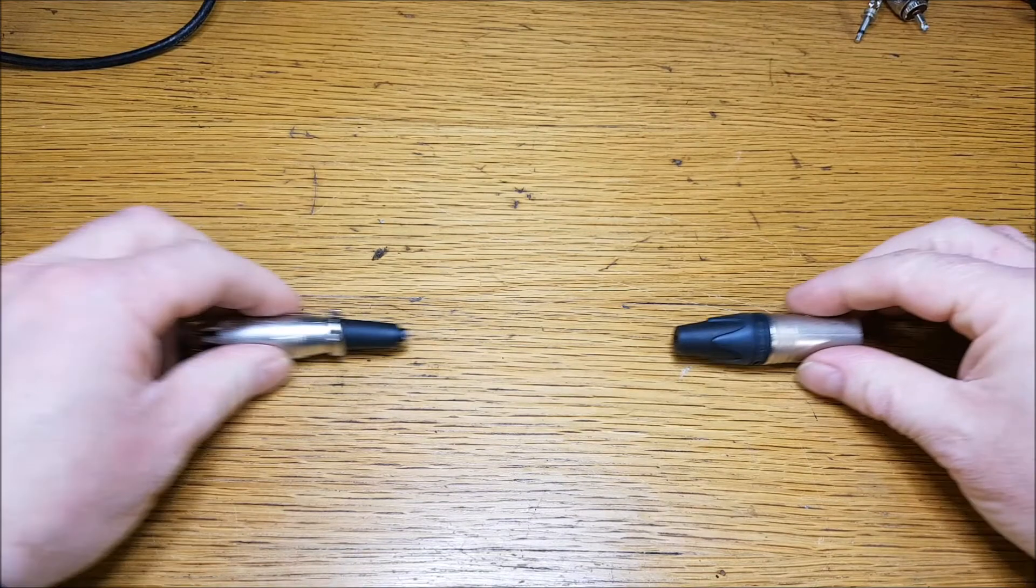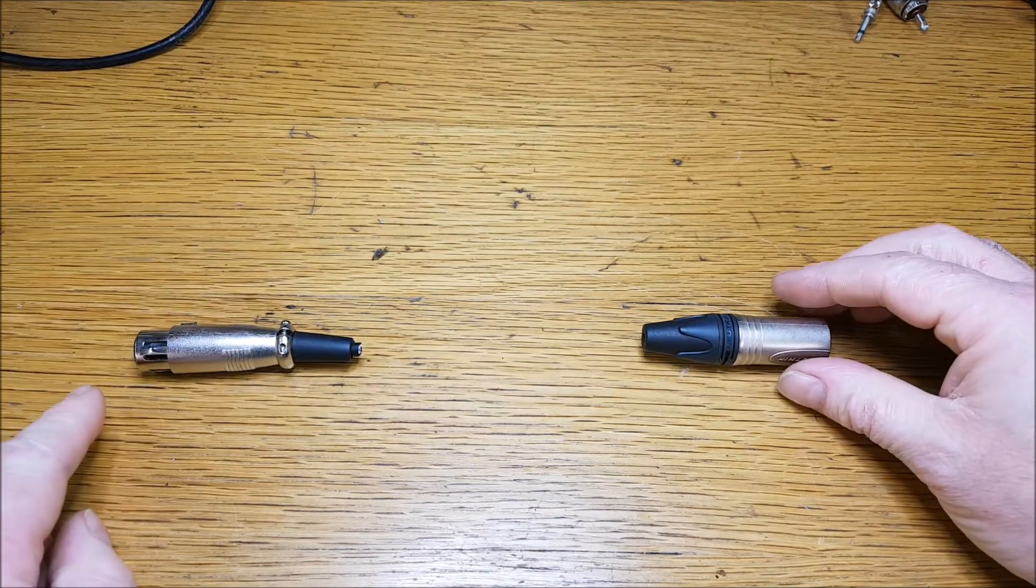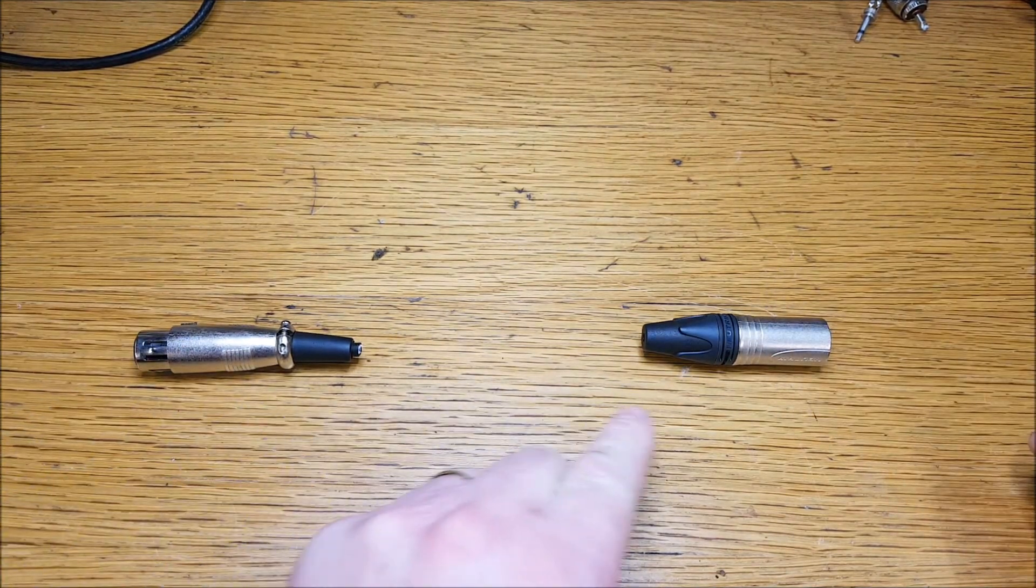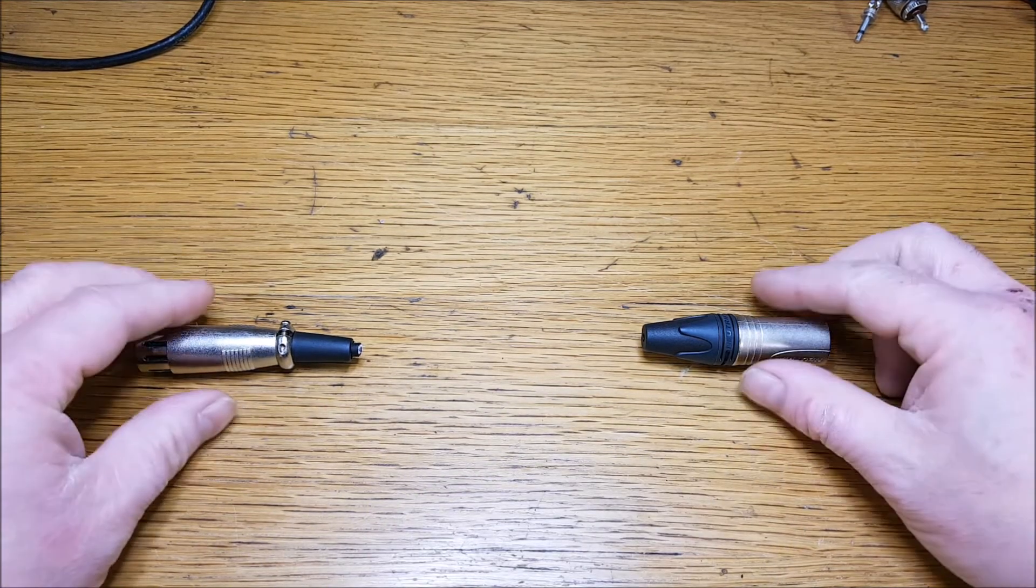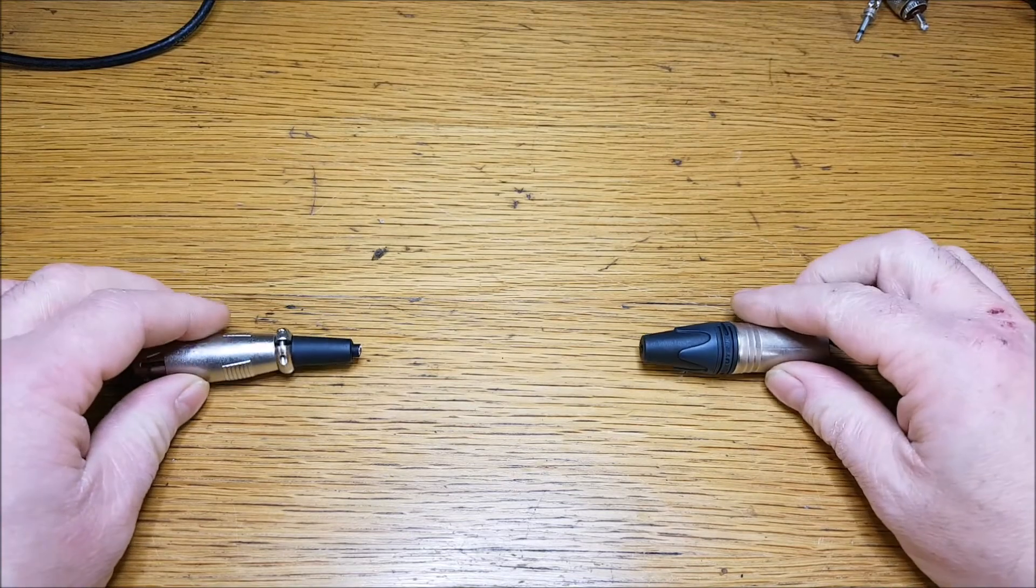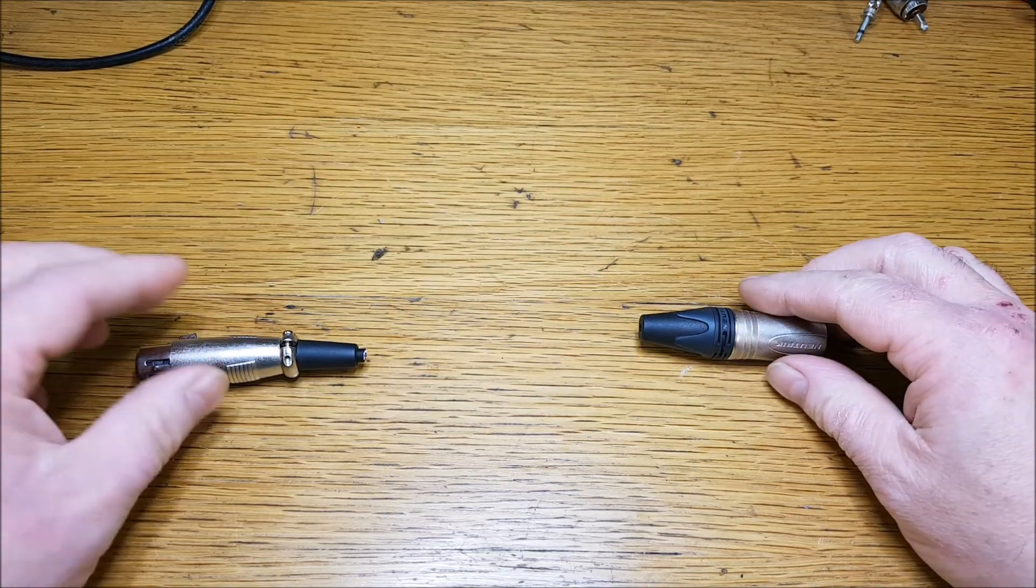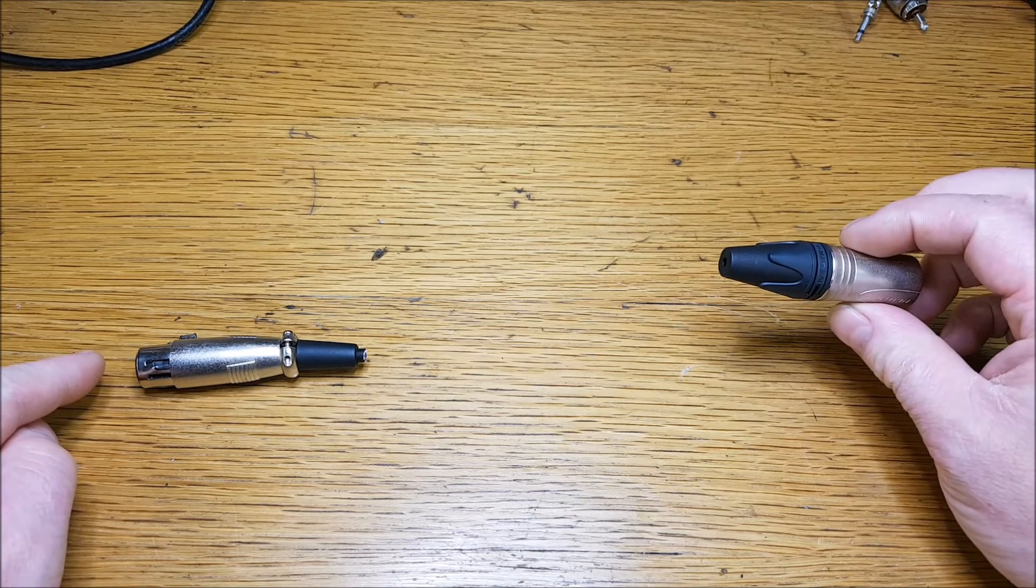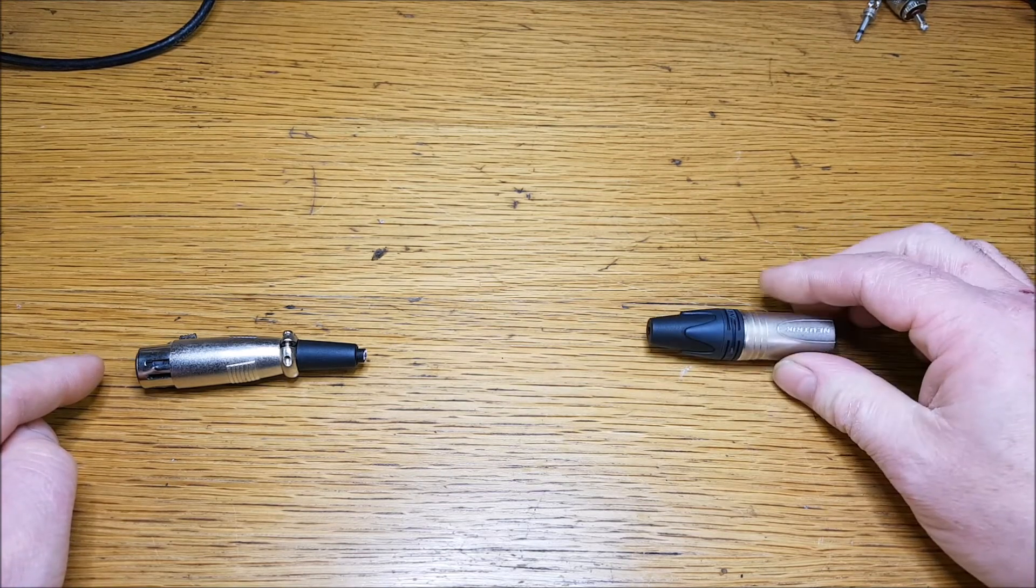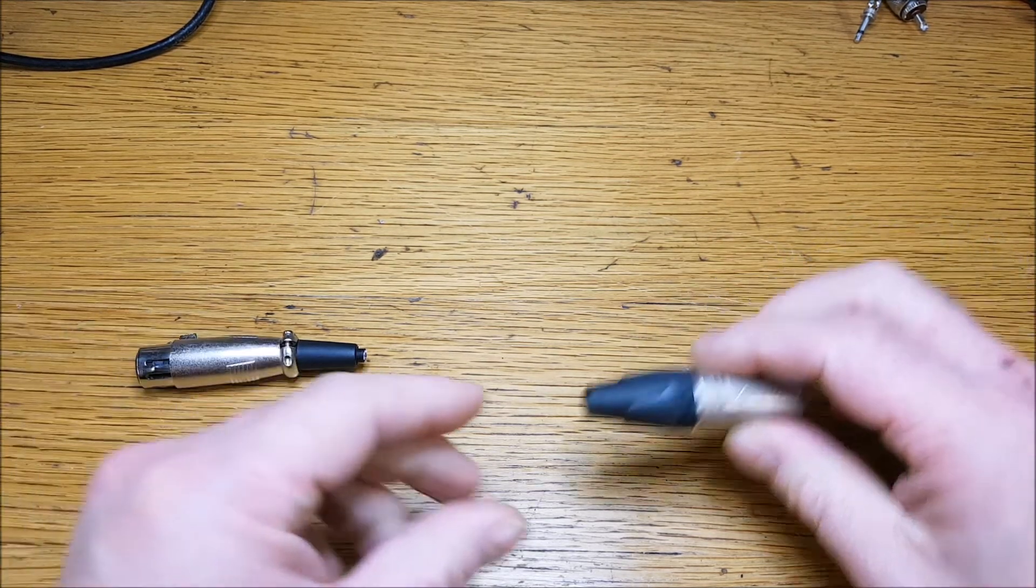So the direction of flow is always this way, from female to male. It always flows that way - that's the direction of travel of these types of connectors. Just the way it works: you'd have your microphone this end and it plug into your preamp or your mixer or whatever on this end. So that's a brief little video about the XLR connector and I hope you find that useful.